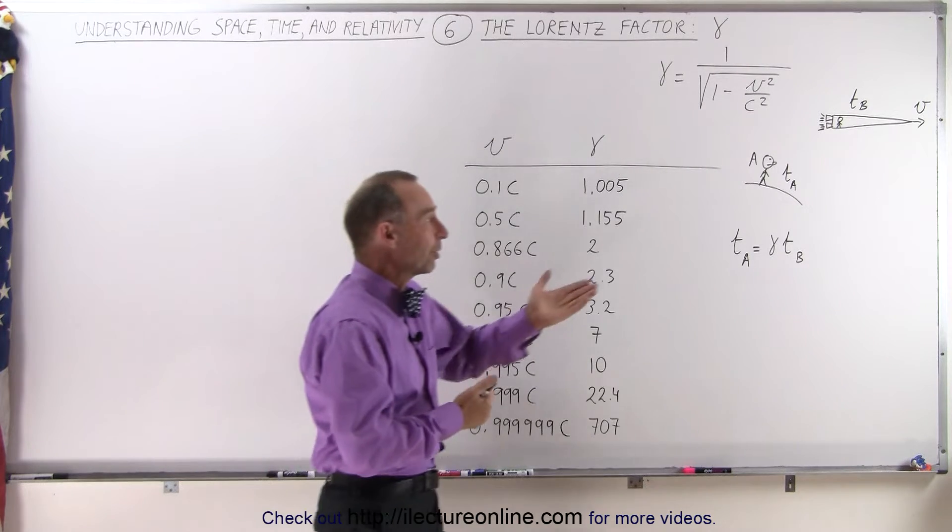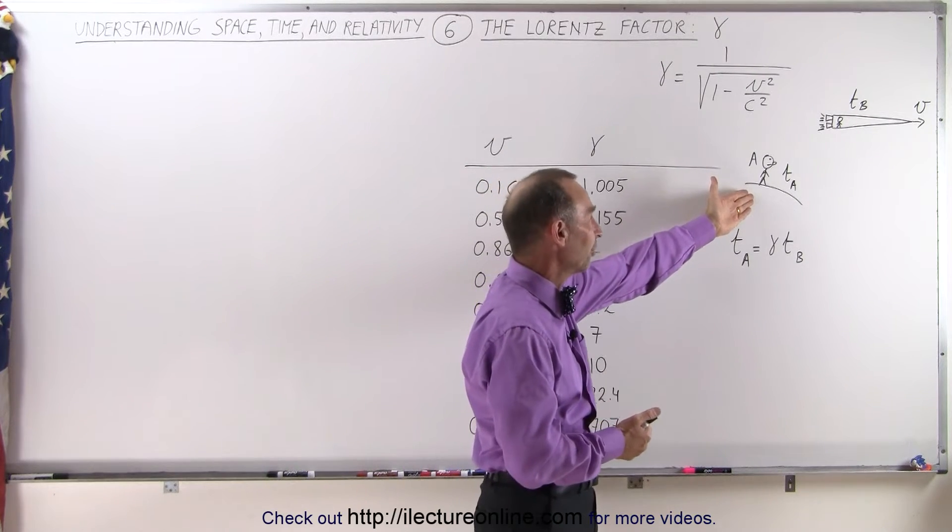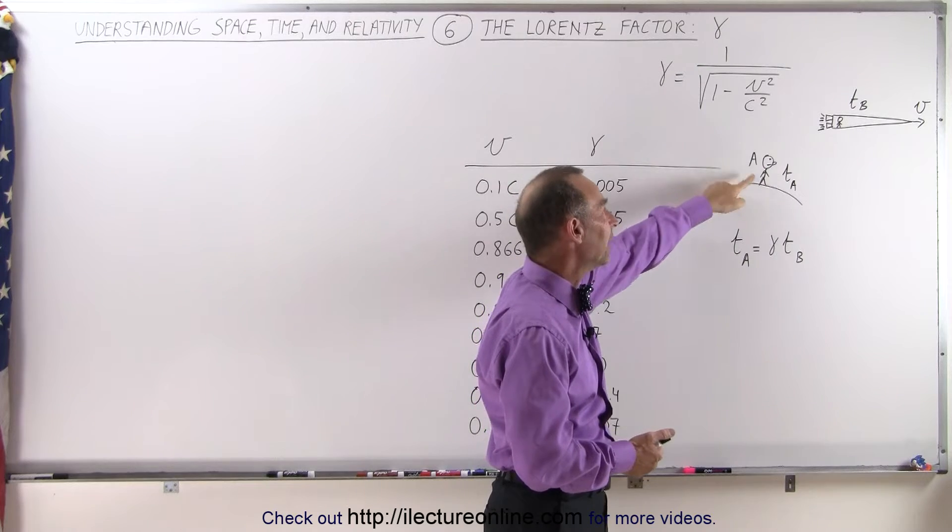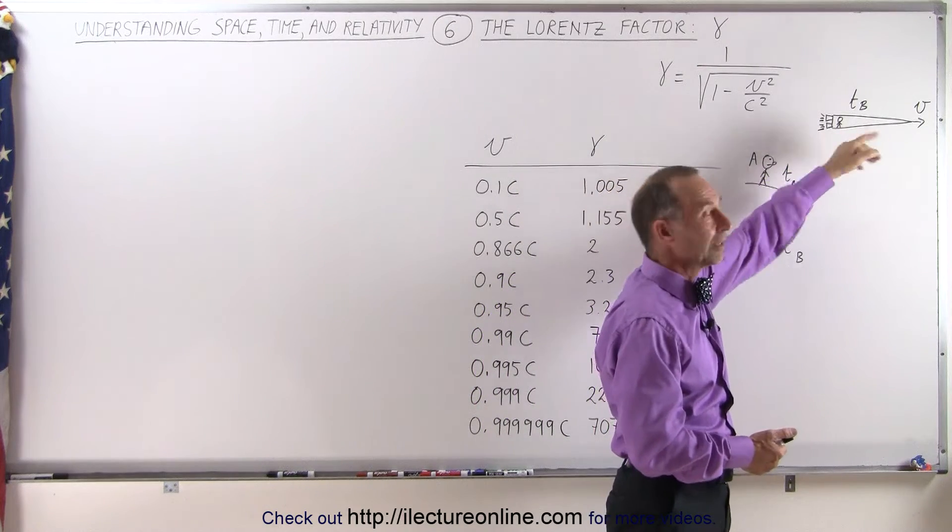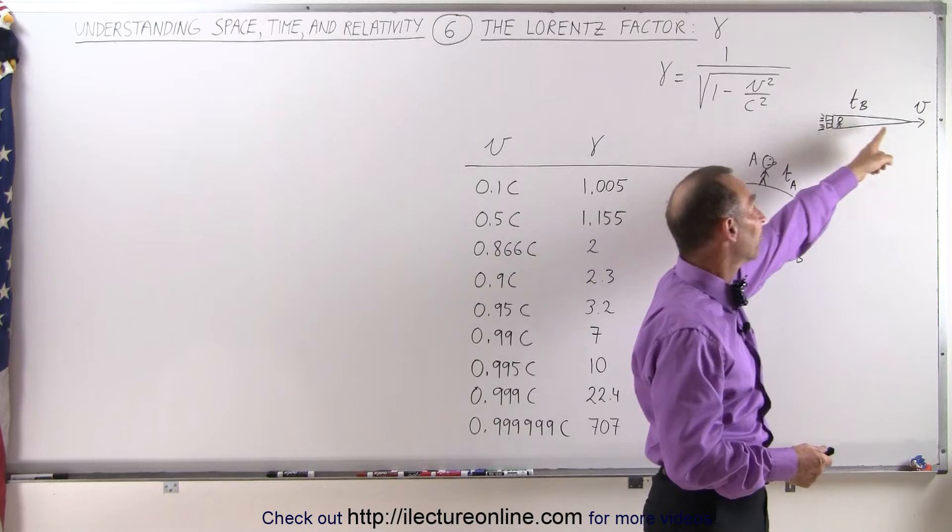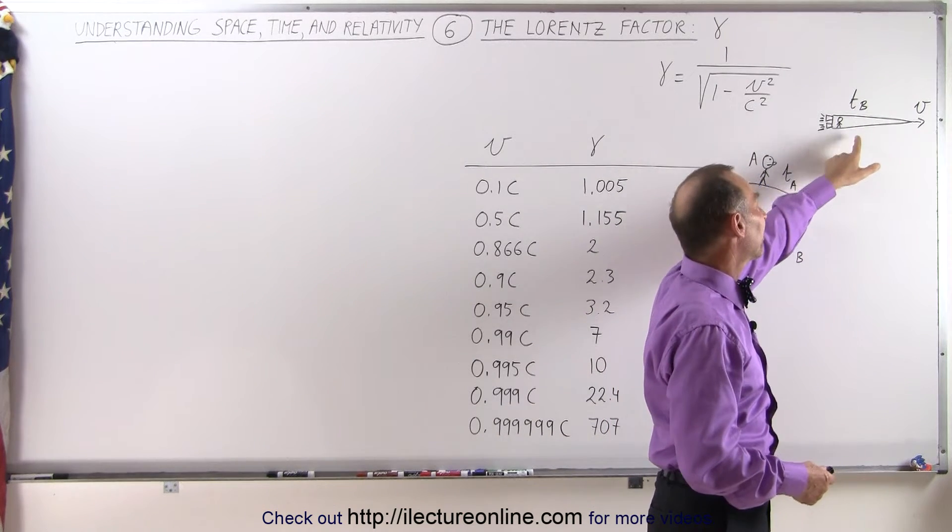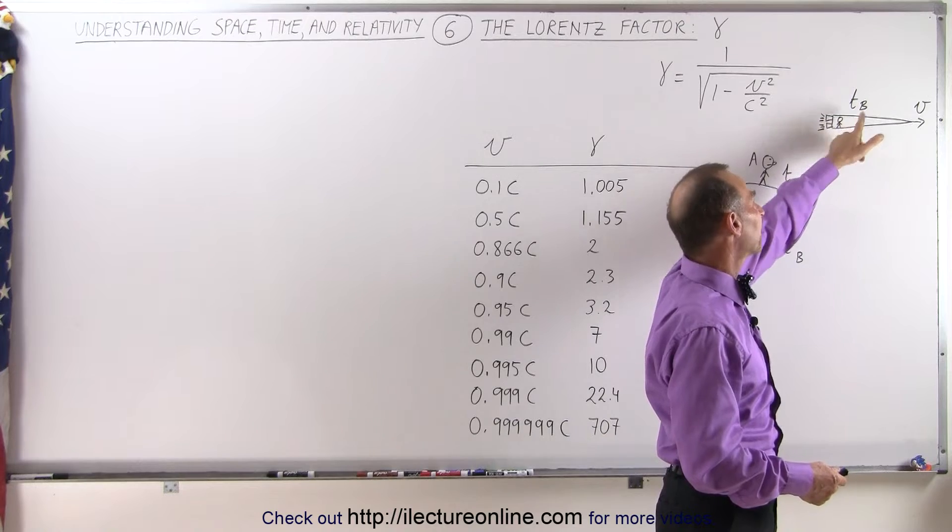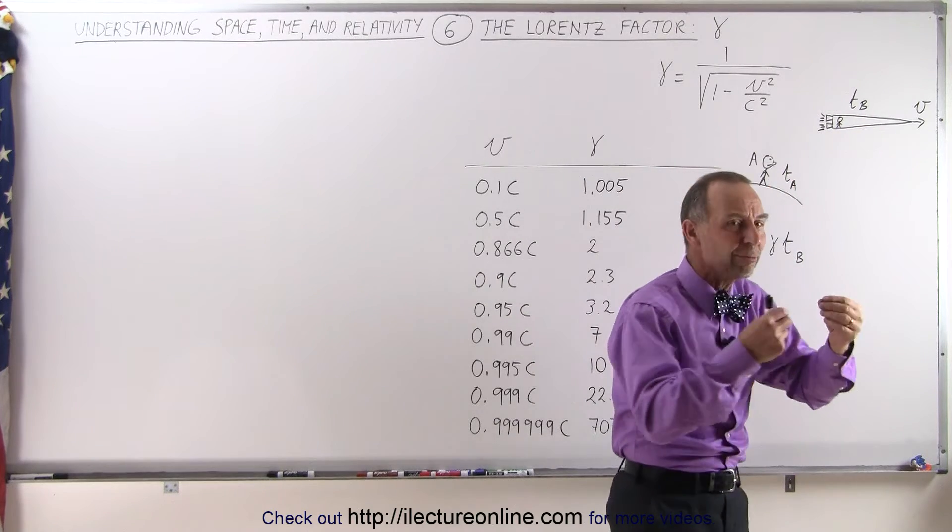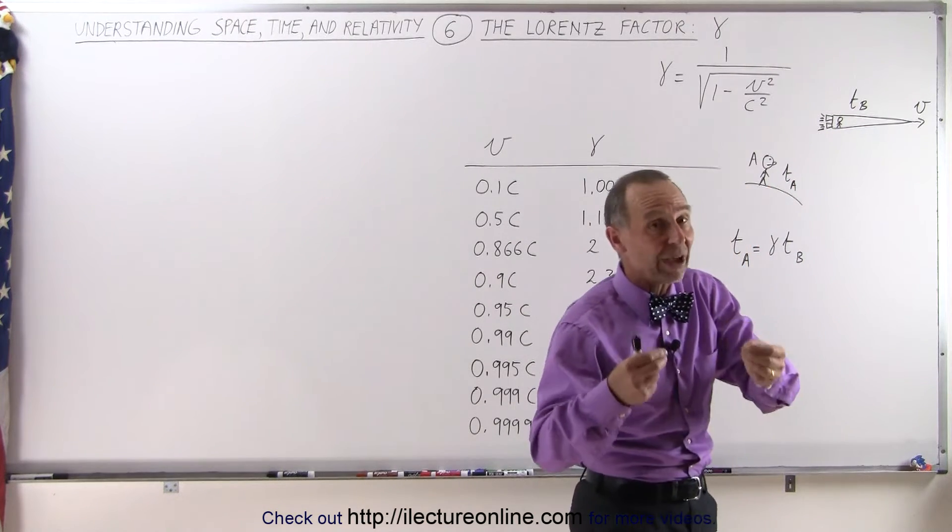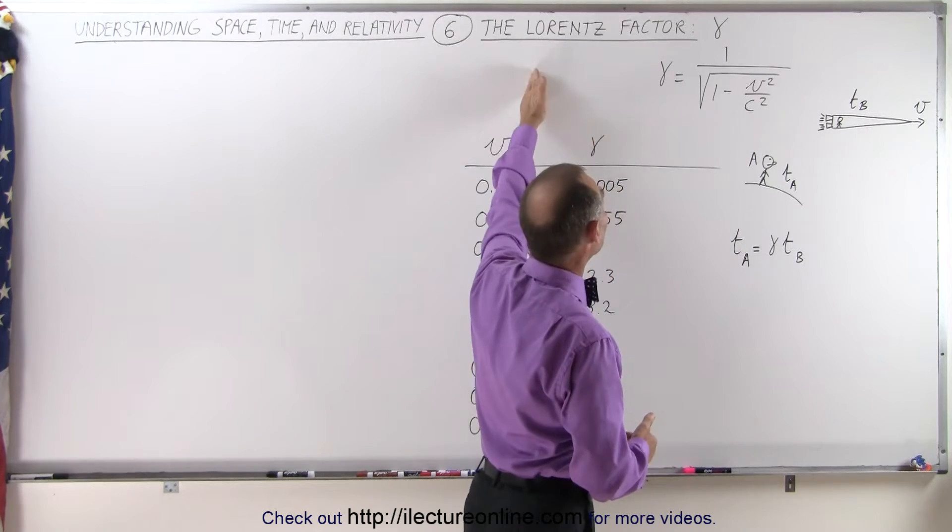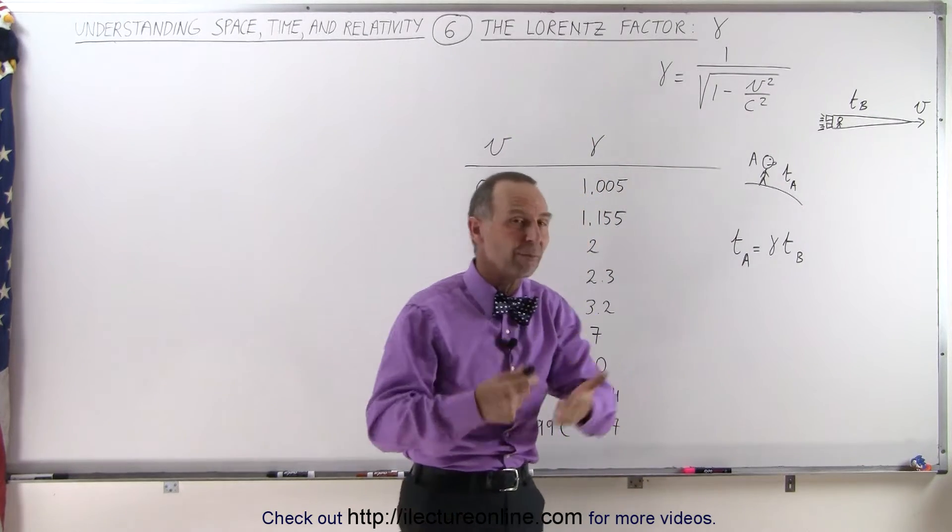For example, if we're on a stationary reference frame like Earth, and we have observer A looking at some object moving at a very large velocity approaching the speed of light, whatever we're measuring here and whatever we're measuring there is going to be different by a factor. That factor is called the Lorentz factor, which came from the Lorentz transformation equations.